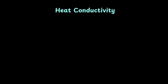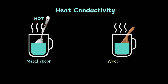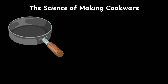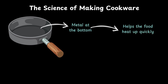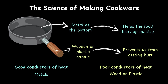Moving on, let's talk about how these materials conduct heat. You can try this: place a metal spoon and a wooden spoon into hot water. A minute later, touch both the handles. The metal spoon is hot, but the wooden spoon is still cold. That's because metals conduct heat – they let heat travel through them quickly. Wood does not let heat pass. This is why cookware has metal at the bottom, which helps the food heat up and get cooked quickly. But the wooden or plastic handle prevents us from getting hurt. So all in all, metals are good conductors of heat, whereas wood or plastic are poor conductors.